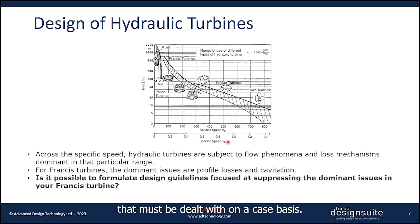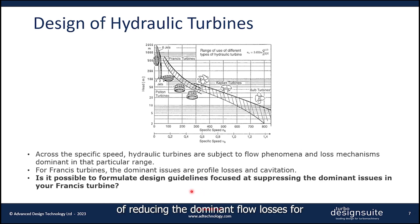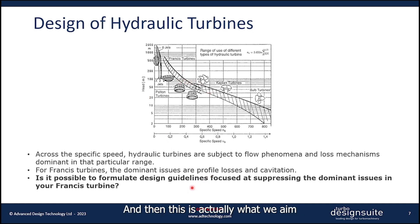Phenomena such as cavitation can affect hydraulic turbines over the entire specific speed range, and this must be dealt with on a case-by-case basis. The question then is whether it's possible to come up with a set of optimal design guidelines based on these fluid dynamic considerations — reducing the dominant flow losses for your turbine — and this is actually what we aim to explore for this project.